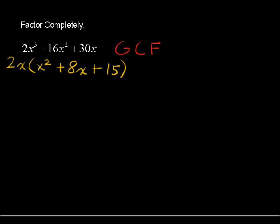So now we have 2x times the quantity x squared plus 8x plus 15. With factoring, this is not the same as dividing out, or like simplifying fractions, where the 2x just is gone. This 2x sticks around. You've just factored it out. It's still part of this expression. Keep that tagging along, and now we're going to factor this trinomial that's left in the parentheses.